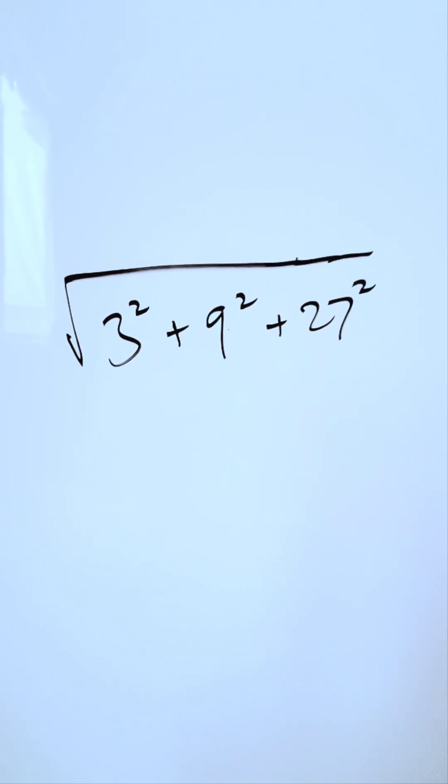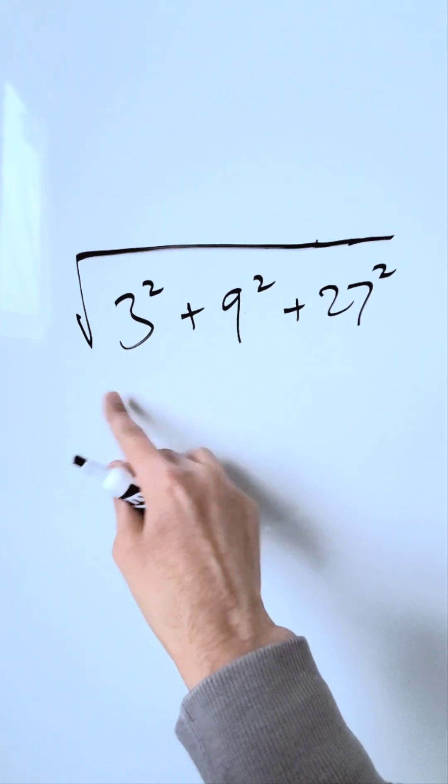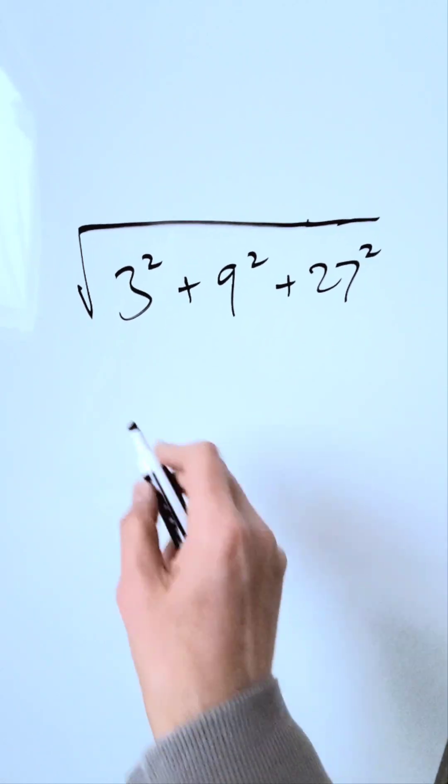Time for some fun in math. I'm looking at the sum right over here in a square root. How can I simplify this in the best way possible?